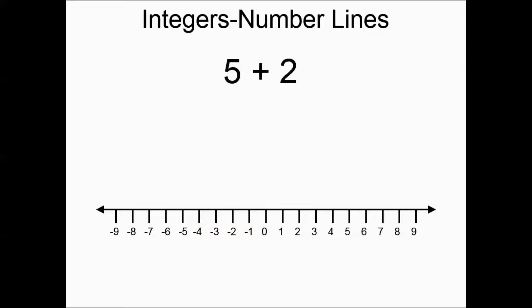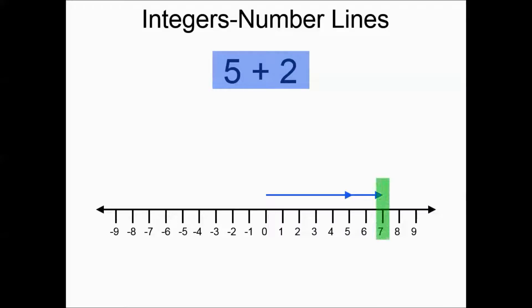Five plus two: that's right five, right two. The arrows are in the same direction so you add them and you end up at positive seven. A right and a right puts you far right.